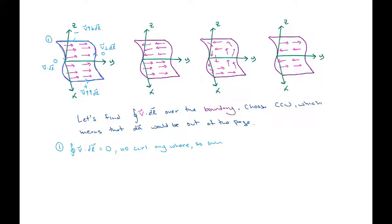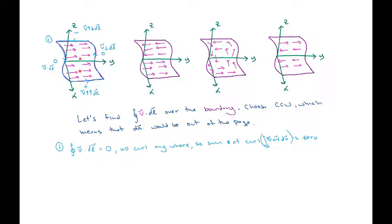Since there's no curl anywhere, the sum of the curl over our surface is zero. If you look at this vector field — it's just a uniform vector field pointing to the right — it should make sense that if I put a paddle wheel anywhere in this field, I would get no circulation, no turning. So the curl is indeed everywhere zero.